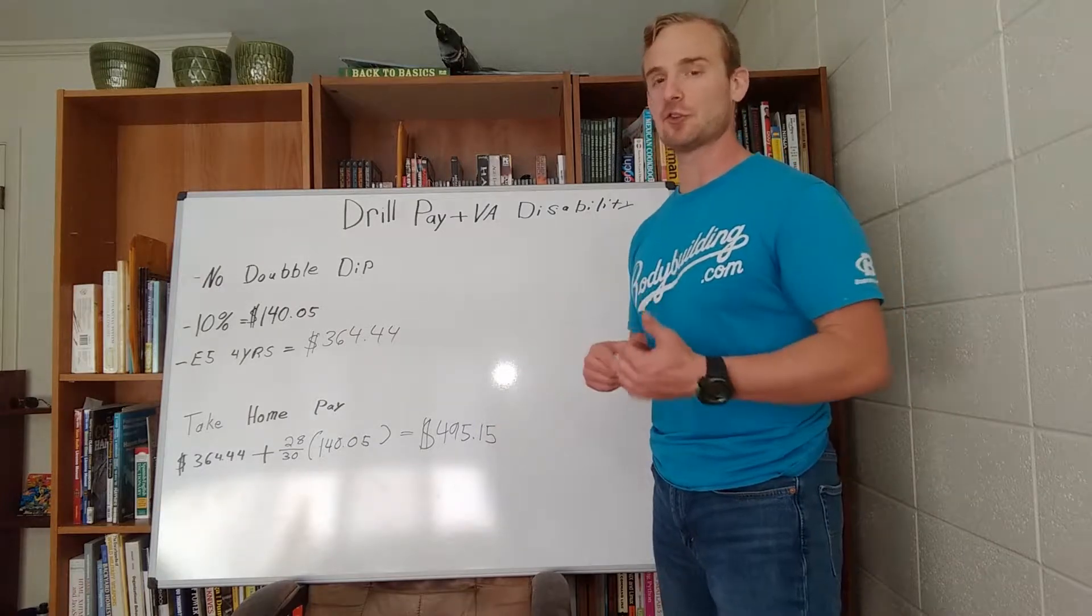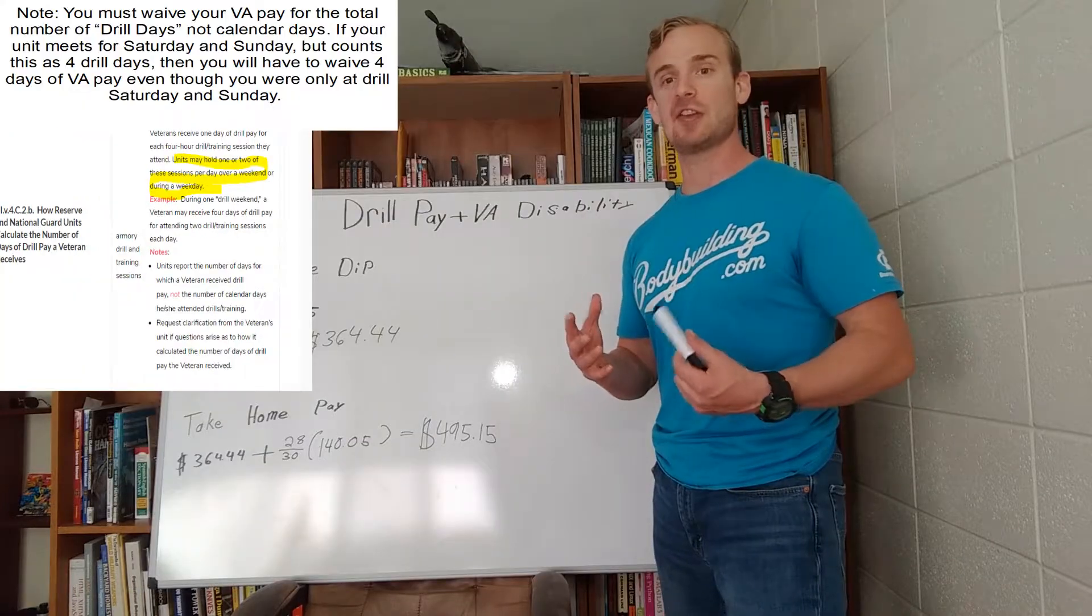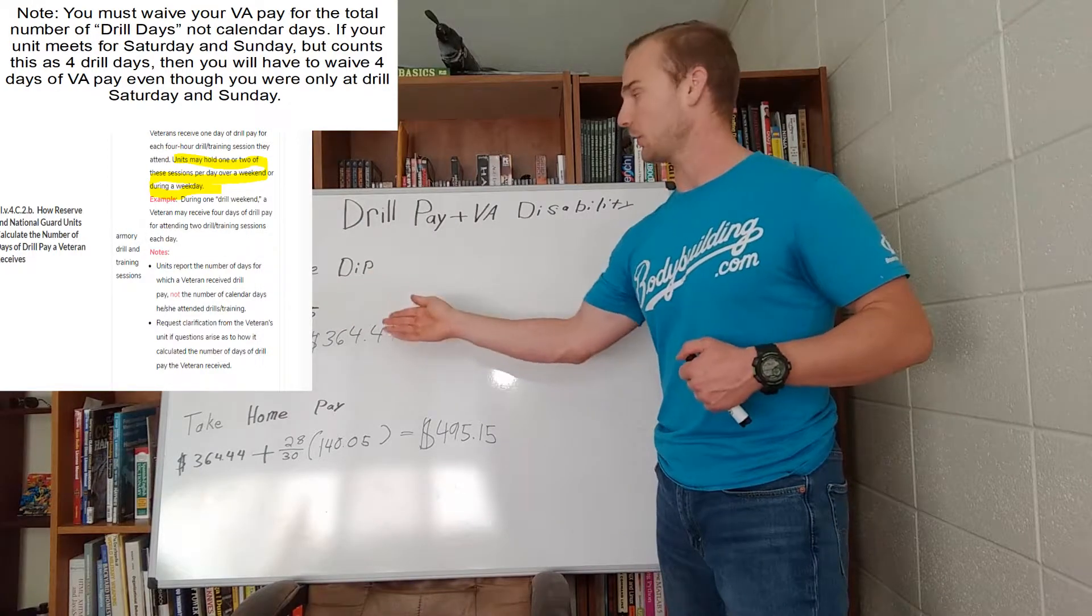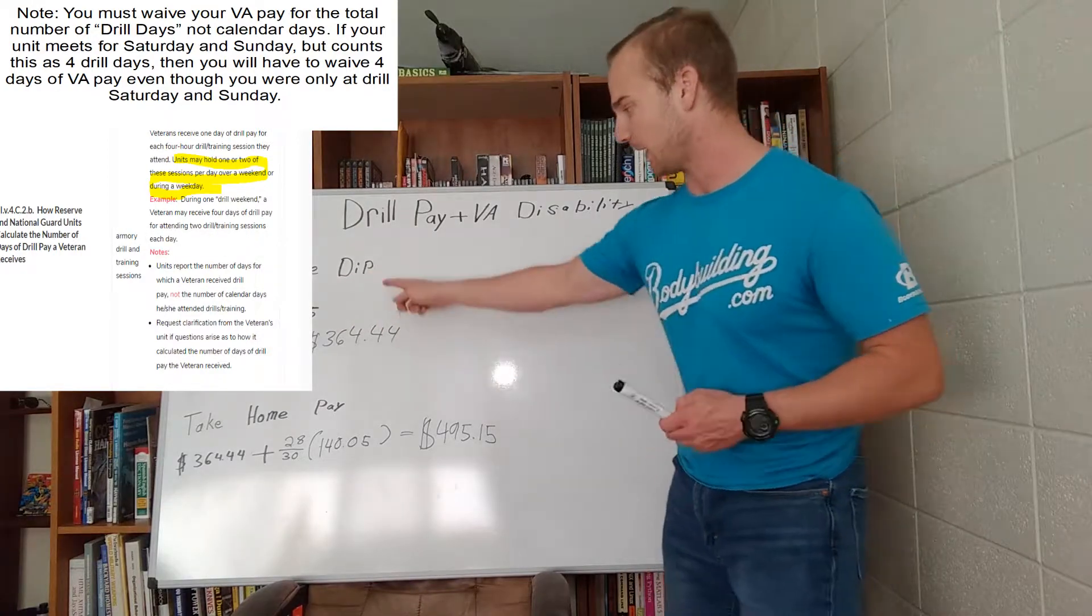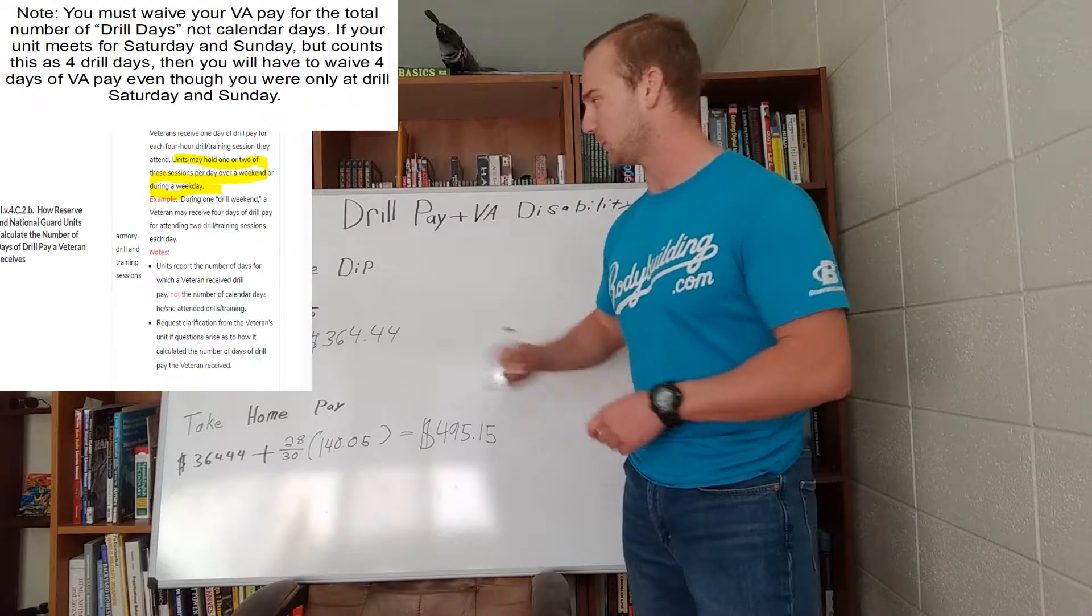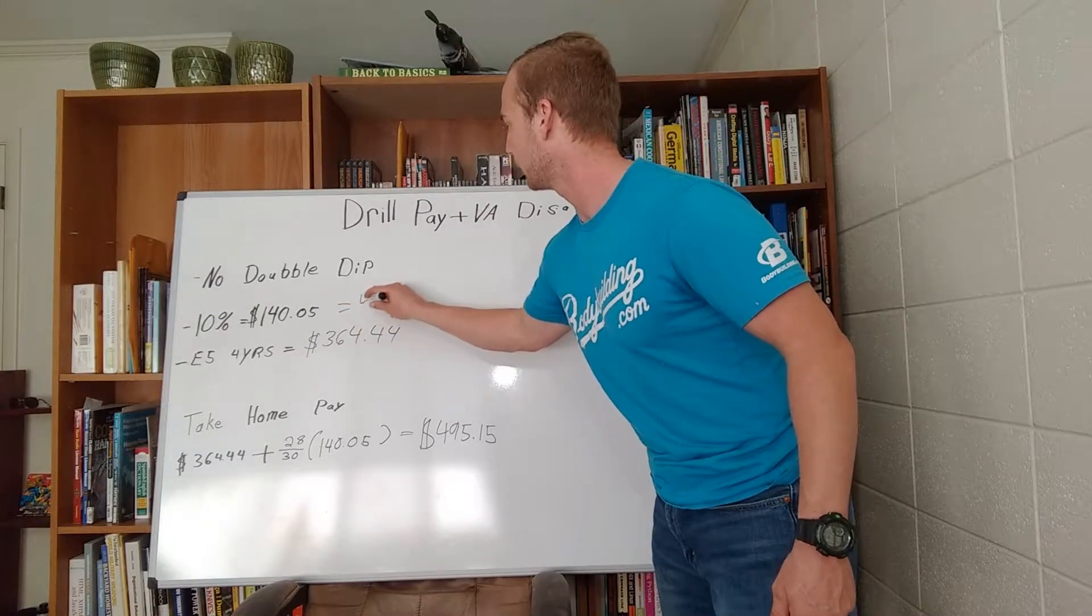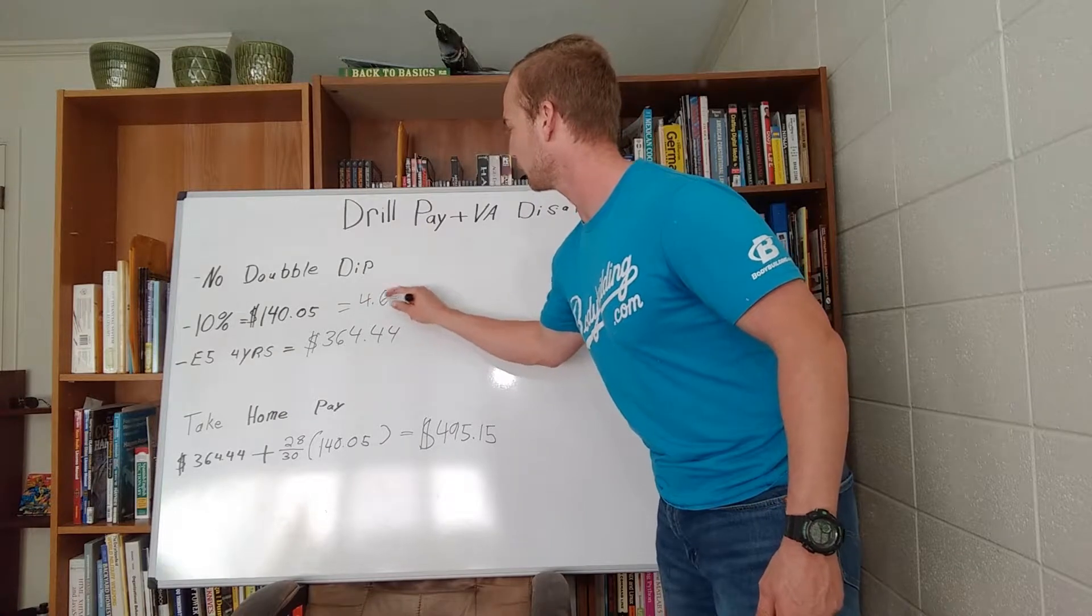So 28, let's suppose there's 30 days in a month, 28 of those days where I don't have drill, I'm getting my $140 from the VA. And if we divide that out, that comes to, I think it's about $5, $4.60 per day.